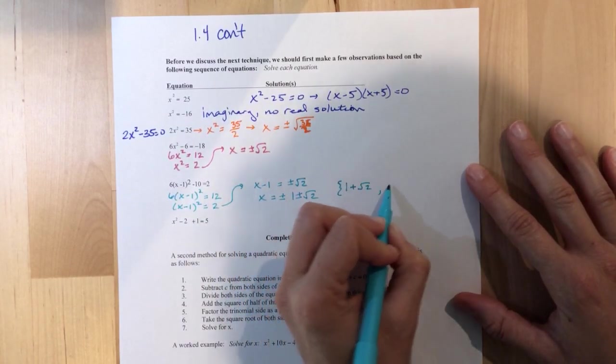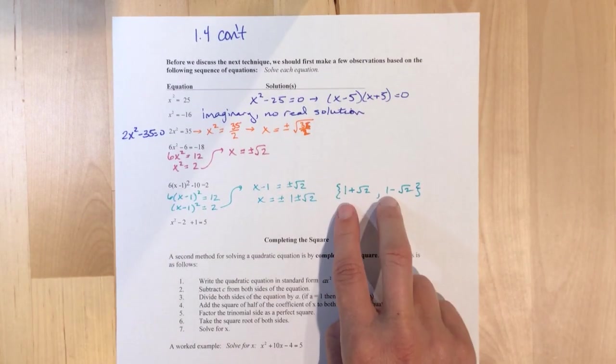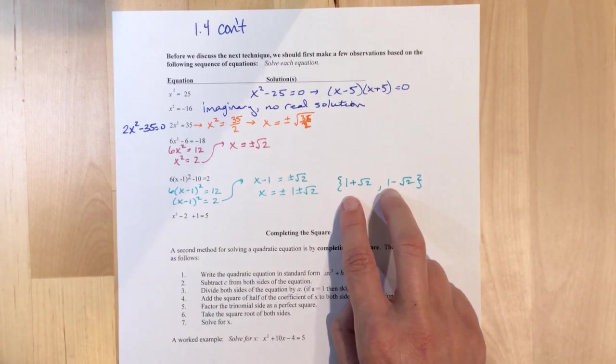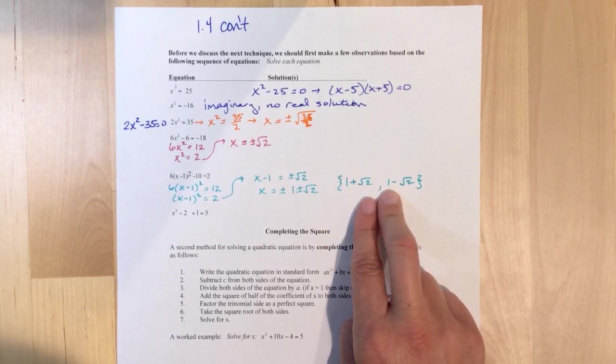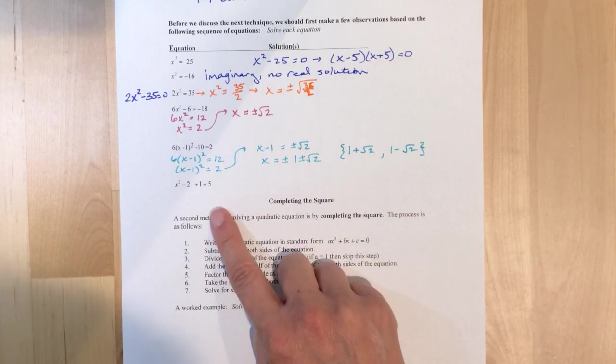And there you go. So here, we've got two answers, 1 plus root 2, 1 minus root 2. I mean, it's not very pretty, but hey, no one said it had to be the Mona Lisa, right? It just has to be the answer. Nothing too crazy. All right, so this one right here.